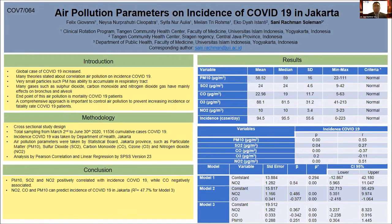The parameters identified include particulate matter (PM), sulfur dioxide (SO2), carbon monoxide (CO), ozone (O3), and nitrogen dioxide (NO2). These variables were analyzed using correlation and linear regression with SPSS version 23.